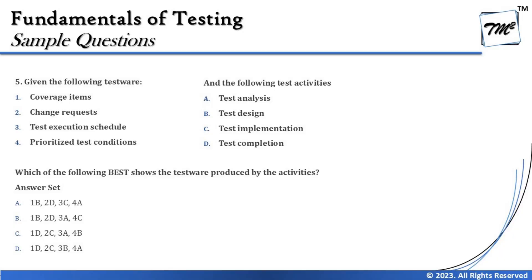The next question is question number 5, a match-the-following type, but this time it's about test work products and test activities. Given the following test work products — coverage items, change request, test execution schedule, and prioritized test condition — match them to the test phases: test analysis, test design, test implementation, and test completion.